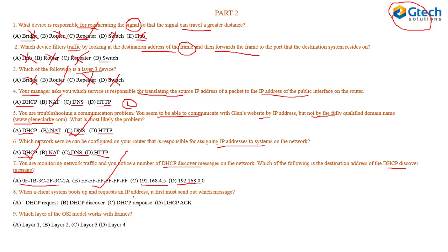Question eight: when a client system boots up and requests an IP address, it first must send out a message. The first thing it sends is a DHCP discover message to discover if there are any DHCP servers available to provide it with an IP address. The answer is DHCP discover. Additionally, which layer of the OSI model works with frames? Layer one physical uses bits, layer two data link uses frames, layer three network uses packets, layer four transport uses segments. The answer is layer two.